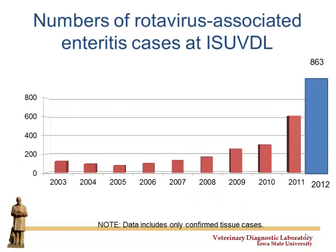The important part to remember is just look how high we've risen in the last two years in the number of rotavirus cases we are diagnosing through the lab. With that, we can tell that you think it's a problem, and we're seeing it as a problem as well. So now we need to do research to figure out what's going on — is there something we can do to prevent it, is it an immunity issue, why is rotavirus so common?